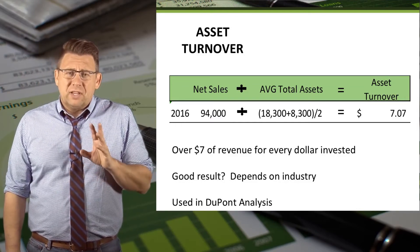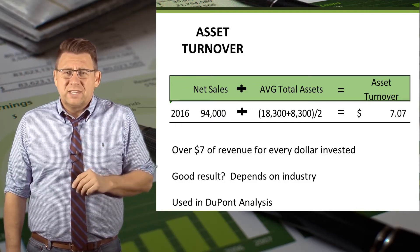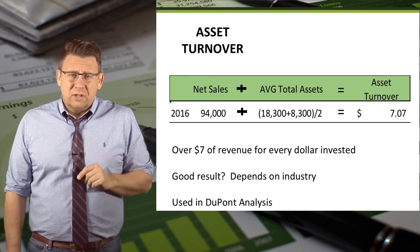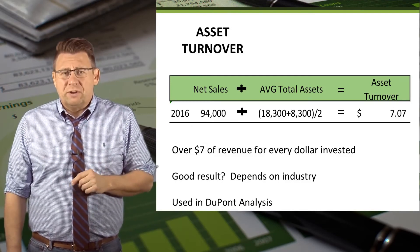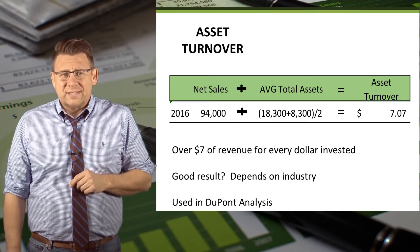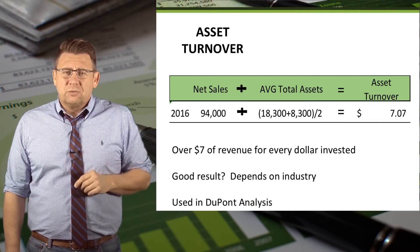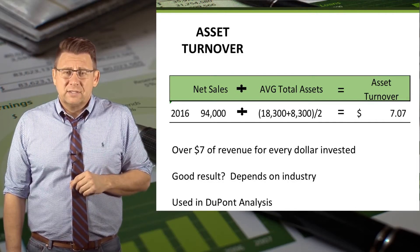Sometimes this is expressed as times, meaning 7 times the amount of revenue as assets. You will see this ratio again if you study the DuPont analysis.